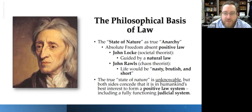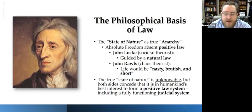John Locke believed that if we got rid of government and law, we'd have a state of peace. He didn't actually want to get rid of the government and the law, because he goes off on a tangent about property law for a very long time — he's really super concerned about property. He says we need the government to protect property, which doesn't really match the rest of his theory, but it is what it is.